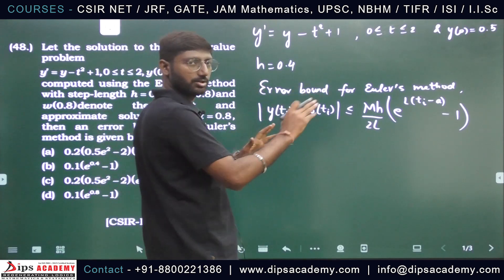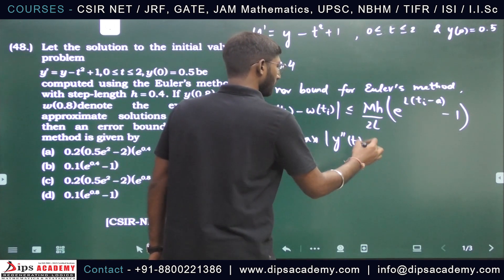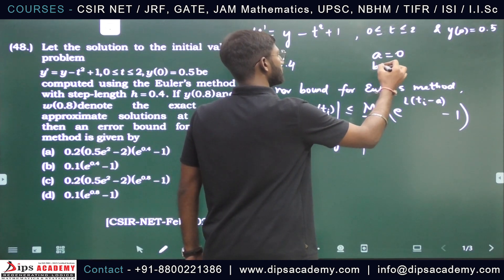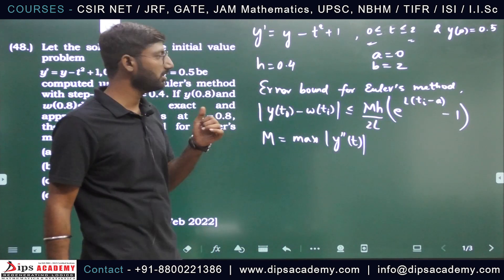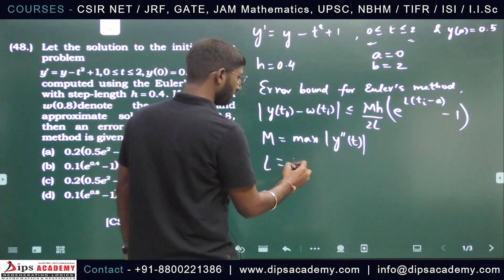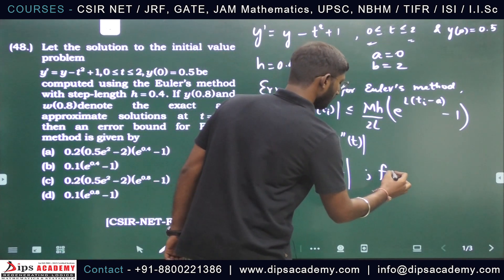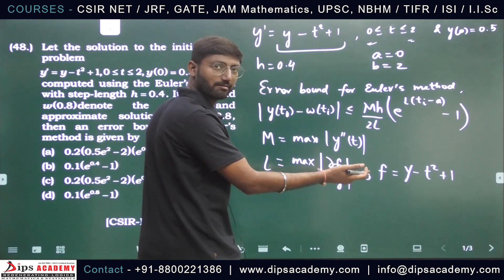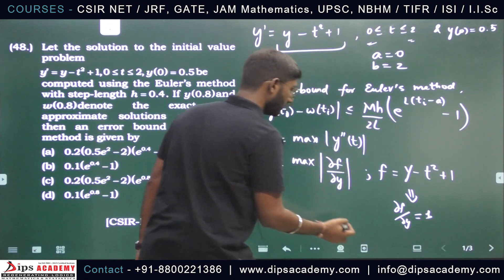Here m is nothing but maximum of y double dash of t. L is the Lipschitz constant, which is maximum of del f over del y. Here f is the right-hand side, y minus t squared plus 1. So del f by del y is nothing but 1, so the Lipschitz constant is directly 1.